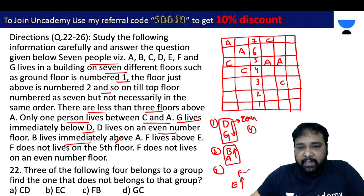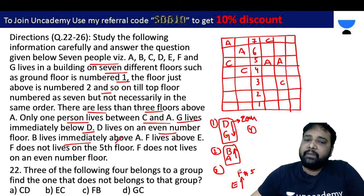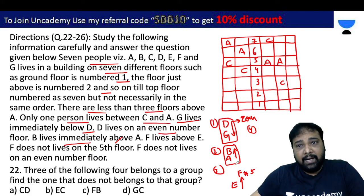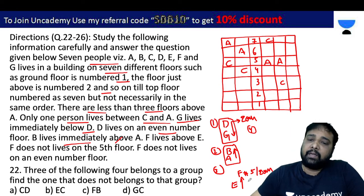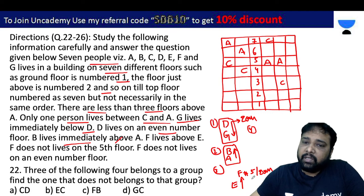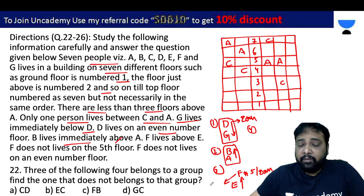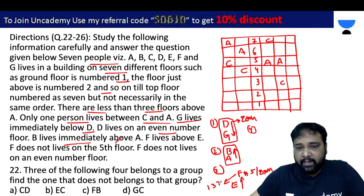F lives above E. Working through the constraints: D is on an even floor. The odd-numbered floors are 1, 3, 5, 7, so the possible placements are being narrowed down.